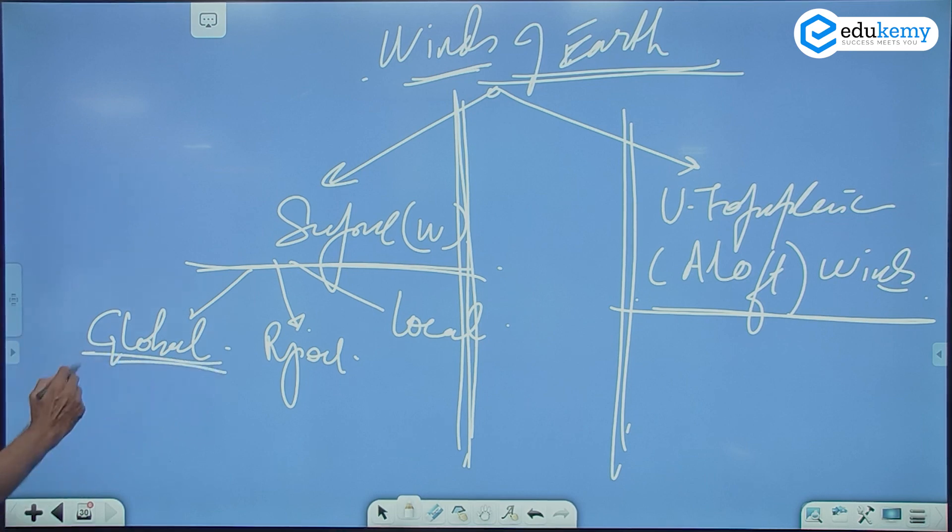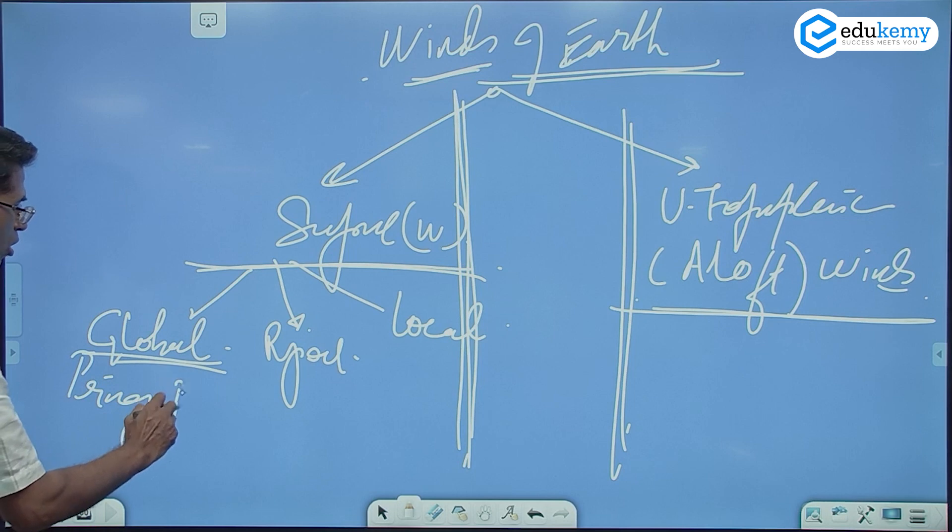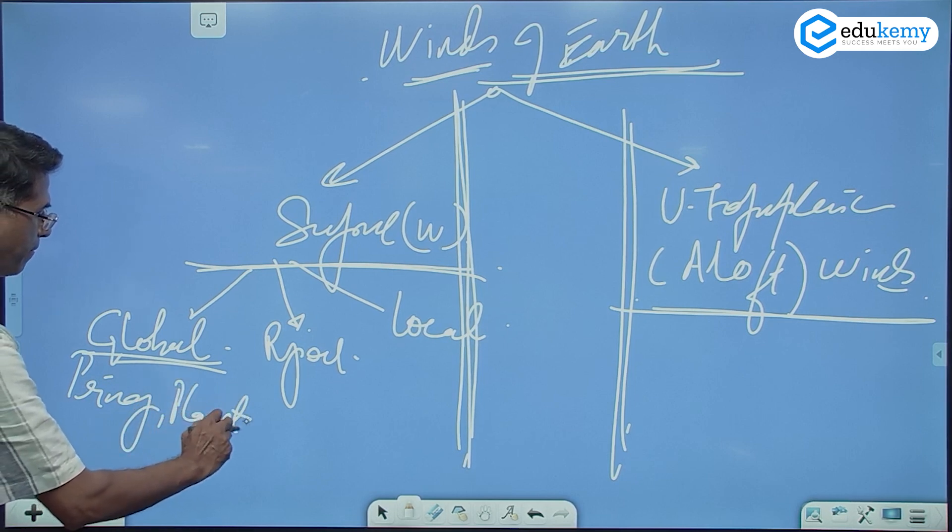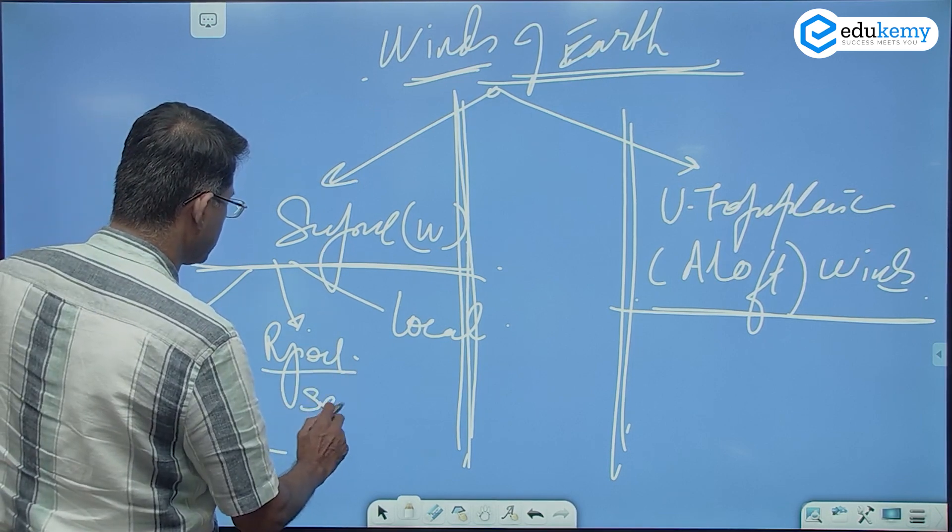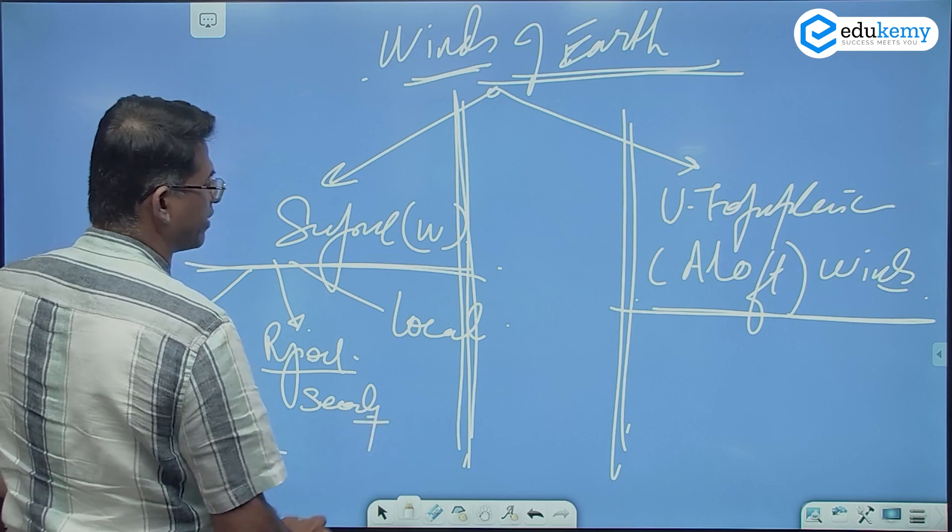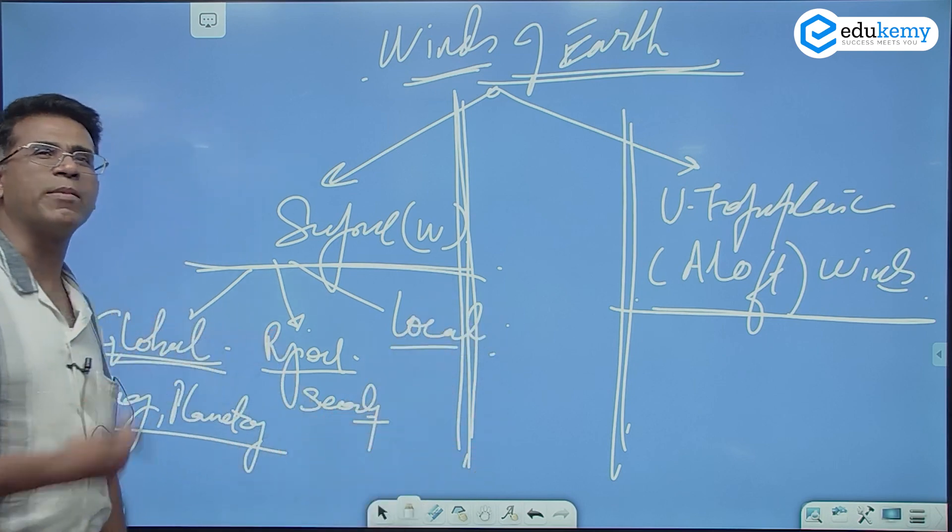The global winds also called as primary winds, also called as planetary winds. Regional winds also called as secondary winds, and local tertiary or just keep it as local.